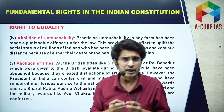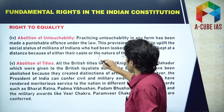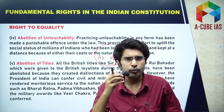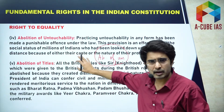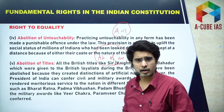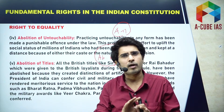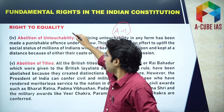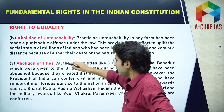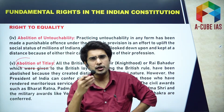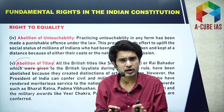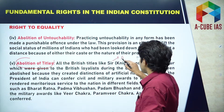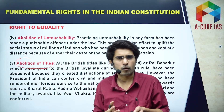Article 17 means abolition of untouchability. The practice of untouchability is prohibited under this fundamental right, and any disability arising out of untouchability is also prohibited. Article 18 talks about the abolition of titles — special titles are not allowed, and the state cannot grant special titles to anybody. This also establishes equality in society.